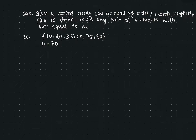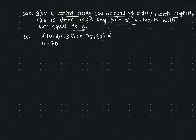So for example, if you are given an interview question which says that for a sorted array in ascending order with length n, we need to find a pair of elements with a sum equal to k. You are given an array and you need to find if there exists a pair which has a sum of 70. Just by looking we know that it is 15 and 20, but how would a computer or an algorithm know that such a pair exists?